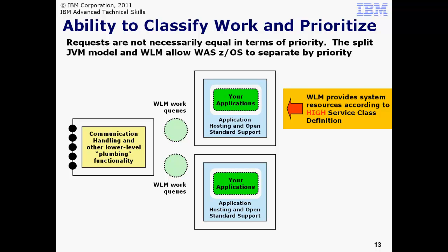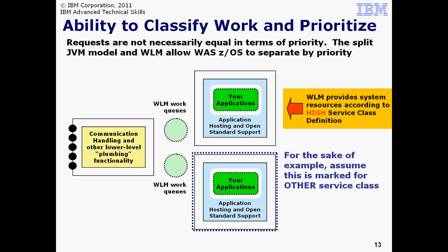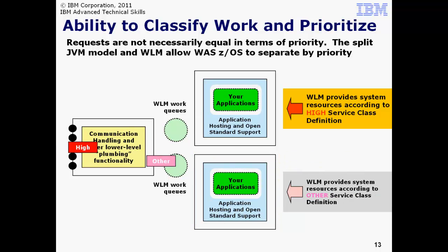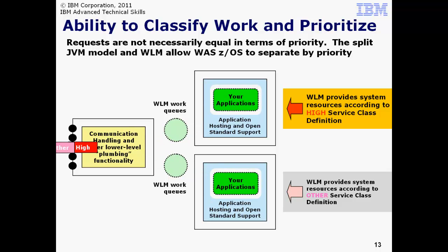Lower priority work receives from ZWM, well, lower priority. The algorithms used by ZWM are very sophisticated, so having lower priority does not necessarily mean the work gets starved for resources. ZWM's design is to balance all resources and all work to meet the goals defined. Let's assume the other Servant has been marked as servicing work with a service class of Other. As work comes into the controller, the controller interrogates each request and determines the classification that should be applied. It then routes that work to the appropriate ZWM work queue designated to service that service class of work. The Servants behind the controller then pull the work and ZWM manages resources to the defined goals of the work marked HI, the work marked Other, and all other work on the system.